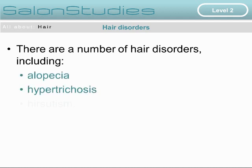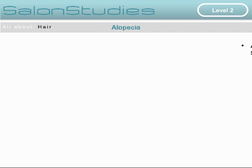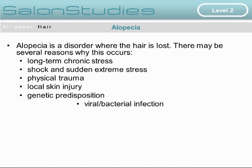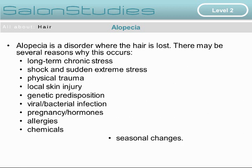Hair disorders. There are a number of hair disorders including alopecia, hypertrichosis and hirsutism. Alopecia is the disorder where the hair is lost. There may be several reasons why this occurs: long-term chronic stress, shock and sudden extreme stress, physical trauma, local skin injury, a genetic predisposition, or possibly viral or bacterial infection. It can also be caused through pregnancy and hormones, allergies, chemicals, and possibly seasonal changes.